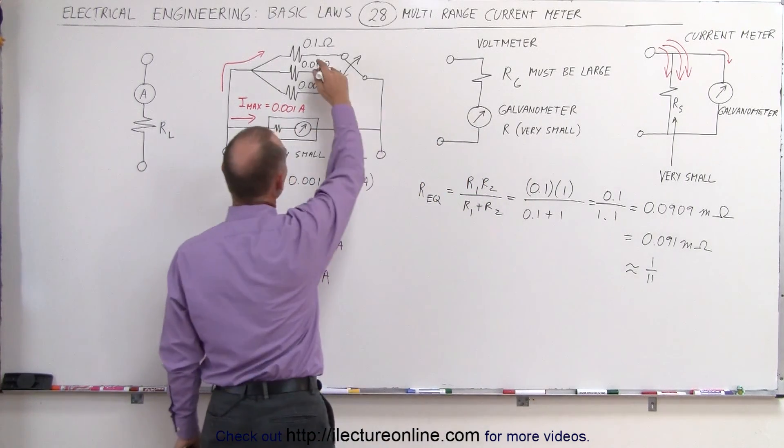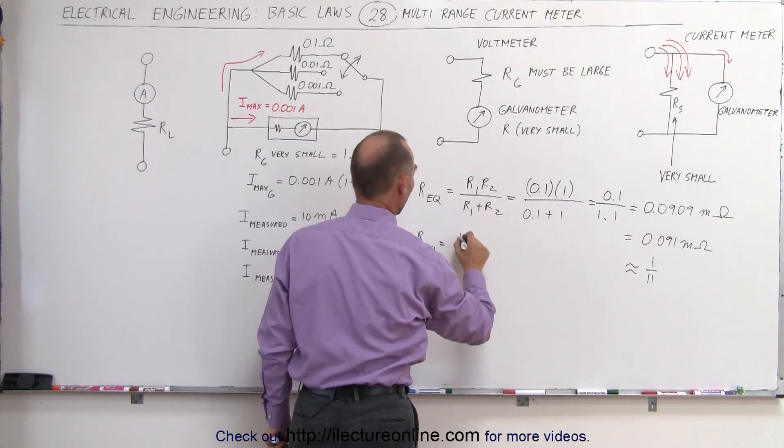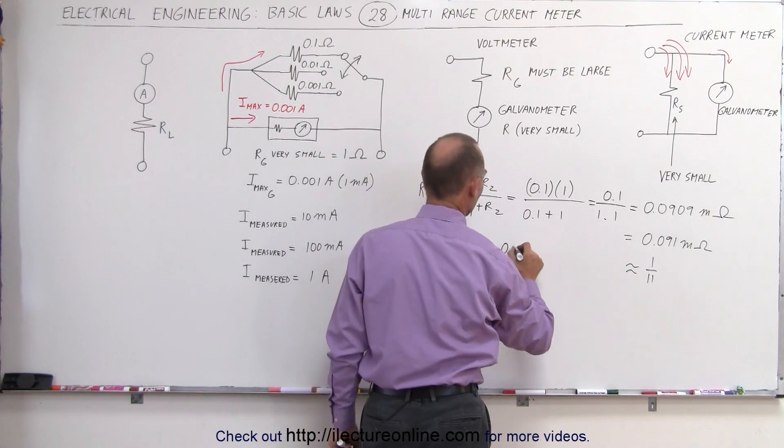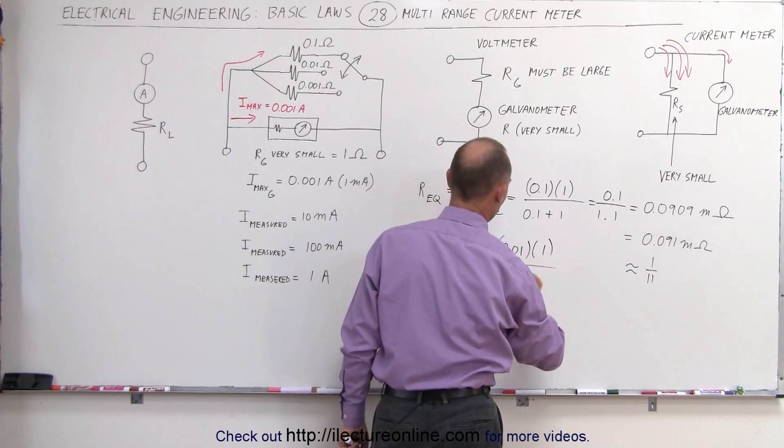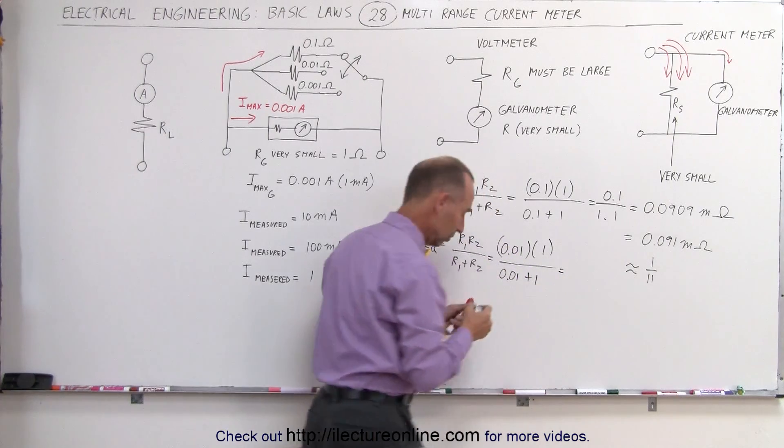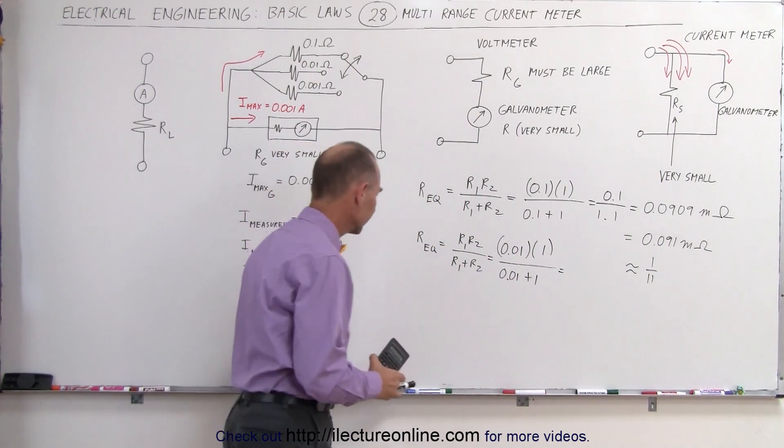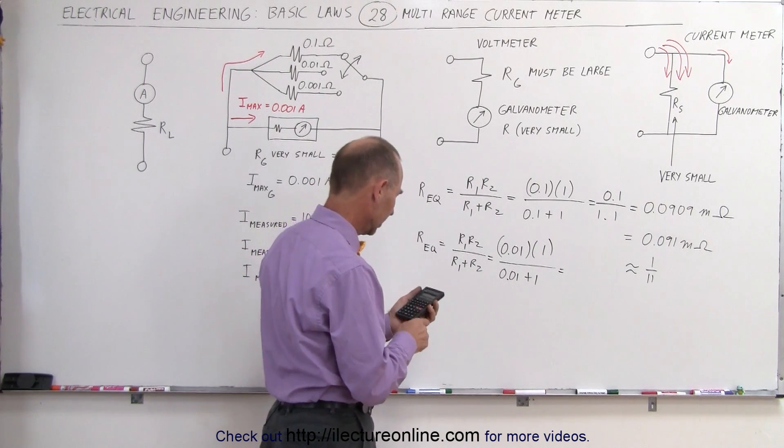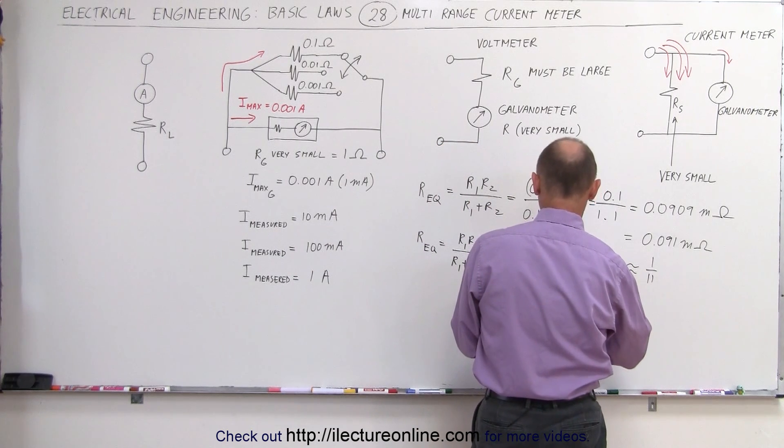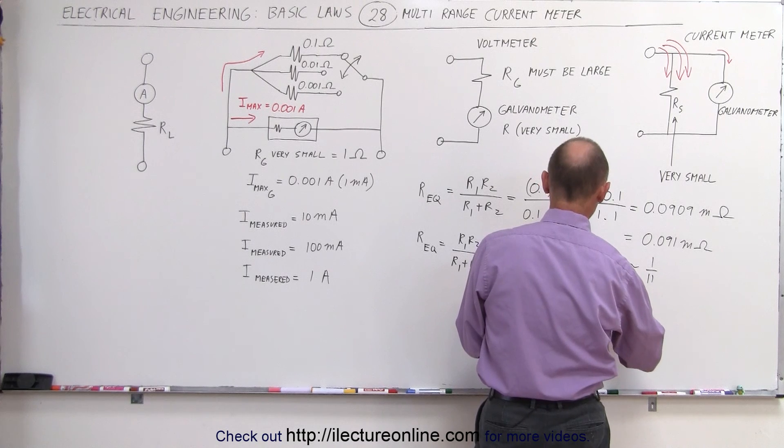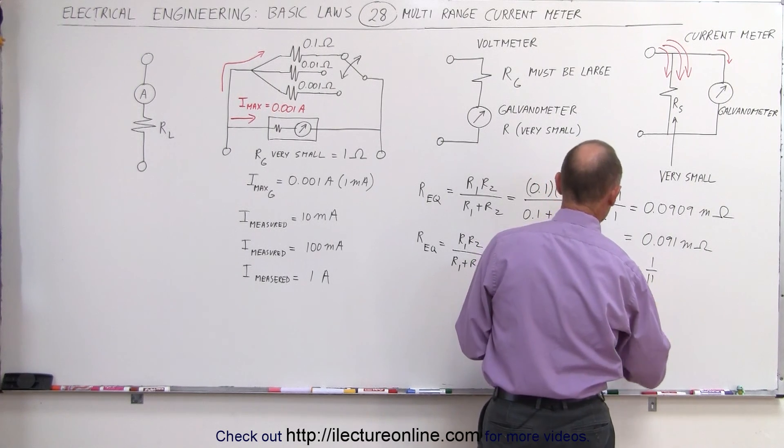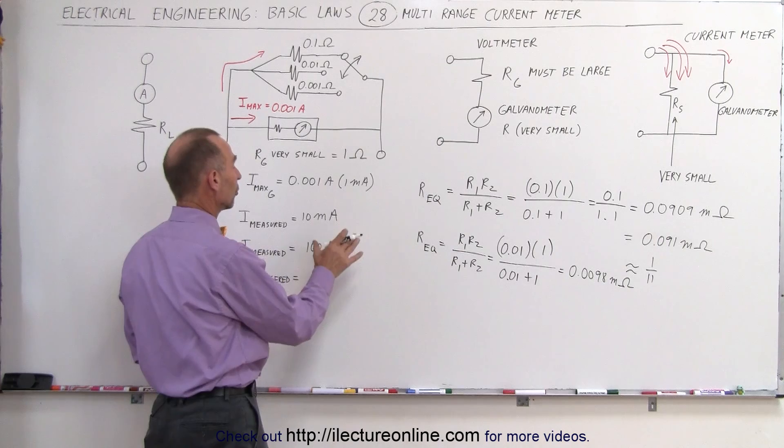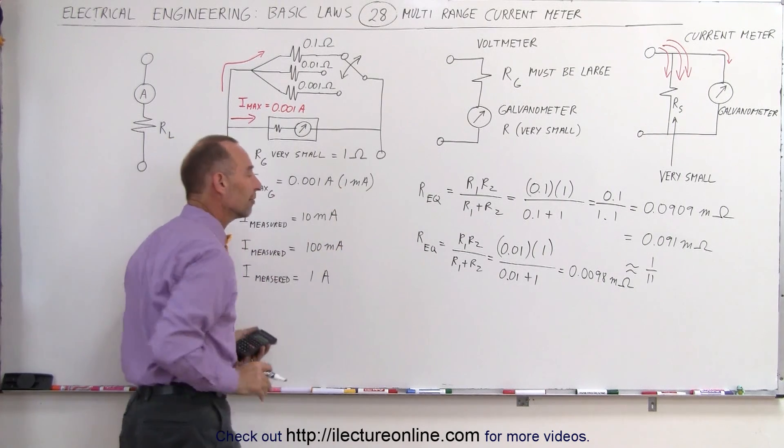What if we take the second resistor, we have the R equivalent there, is equal to R1 times R2 divided by R1 plus R2, which is equal to 0.01 times 1 divided by 0.01 plus 1, which is equal to, and again with the calculator, we get 0.01 divided by 1.01 equals, and that one is equal to 0.0098 milli-ohms. Notice that that is much closer to 1-100th the resistance of the original galvanometer, which means you can measure currents 100 times as large as what the galvanometer can handle.